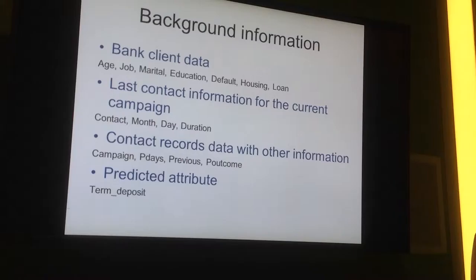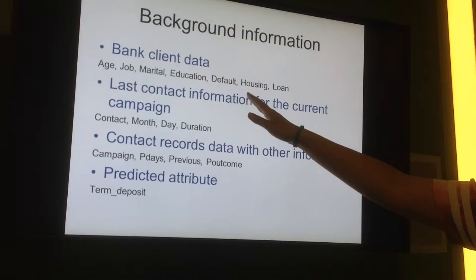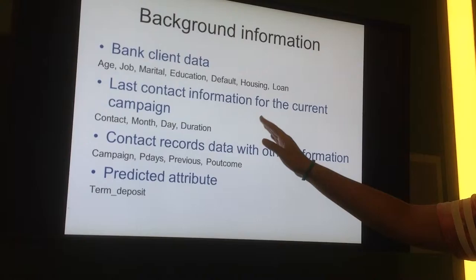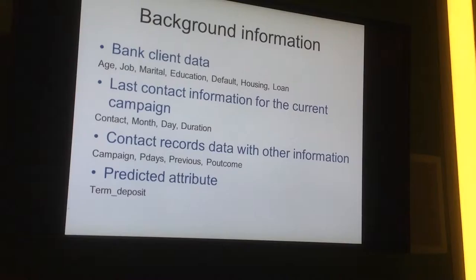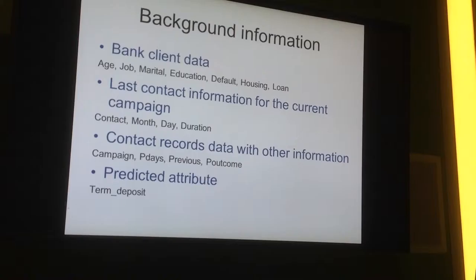Banking Client Data consists of four big parts. The first one is the Bank Client Data, which consists of Age, Job, Marital, Education, Default—whether the credit card is in default or not—Housing, whether the client has a house loan or not, and Loan, whether the client has a personal loan or not.